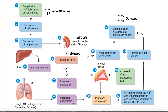Angiotensin 2 is the active or mature form of the angiotensin hormone, and it's going to have several functions. One of these functions is to act directly on certain cells of the adrenal cortex. When angiotensin 2 acts specifically on the cells of the zona glomerulosa of the adrenal cortex, it triggers them to release aldosterone into the blood.